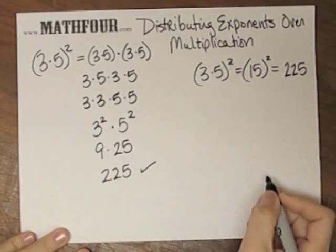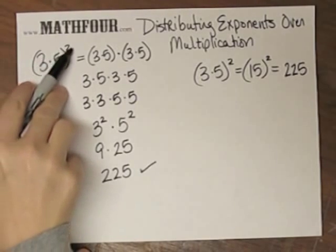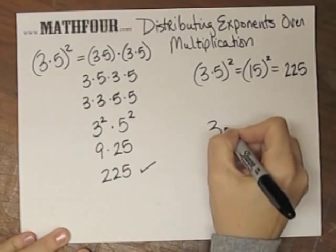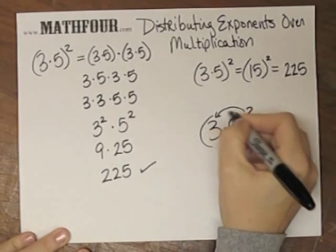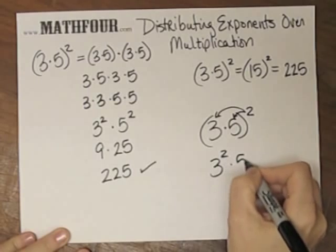So that's distributing exponents. The exponent distributes over the multiplication like this, 3 times 5 squared. So this can go whoop and whoop. There's my distributive, so 3 squared times 5 squared.